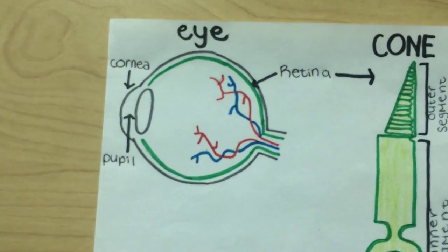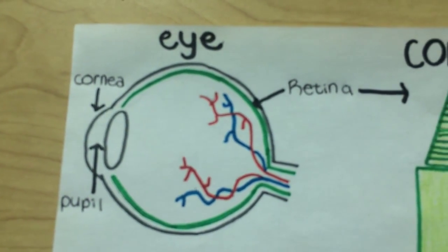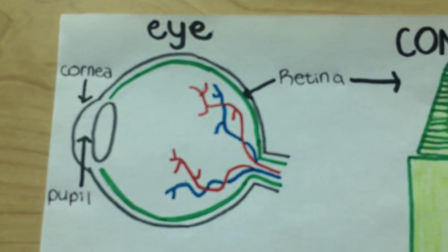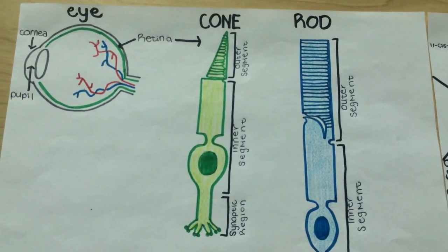When a ray of light hits the eye, it hits in a place towards the back, called the retina. The retina consists of two types of photoreceptors, called cones and rods.